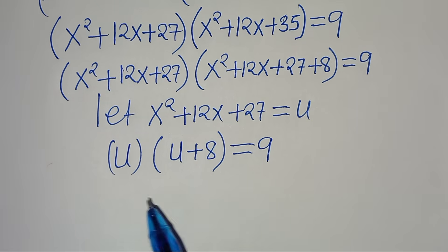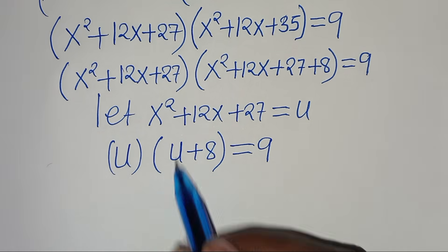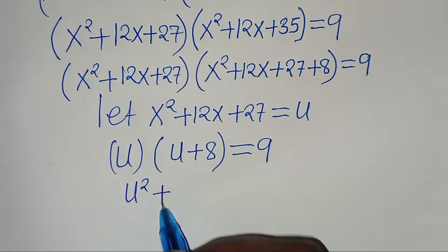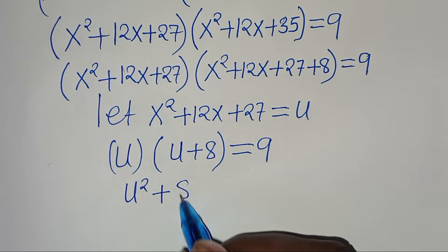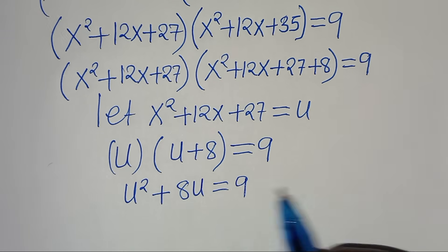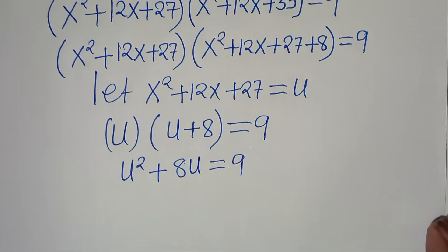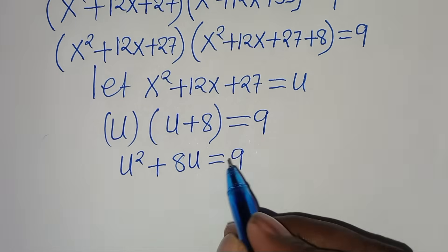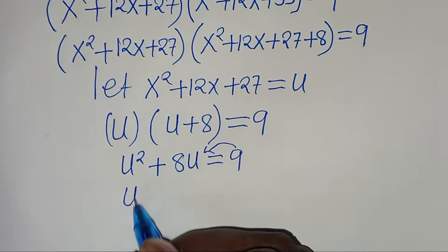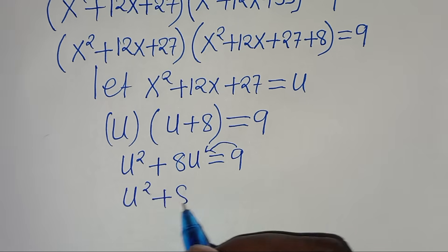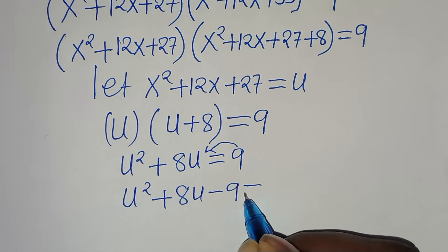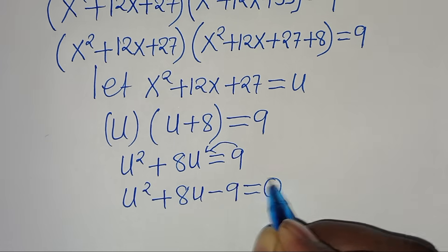Expanding u(u + 8): we have u² + 8u = 9. Moving 9 to the left-hand side gives u² + 8u − 9 = 0.